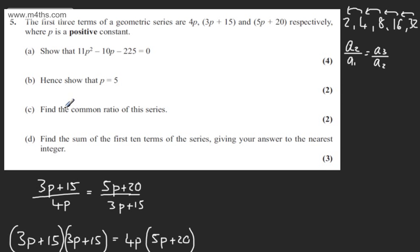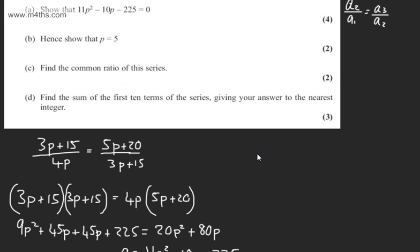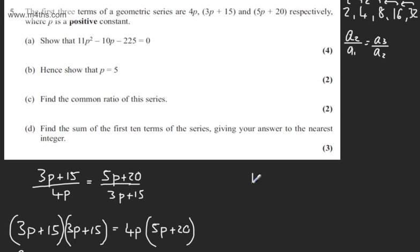In part C we need to find the common ratio of this series. So if we take p equal to 5, we have a first term, a sub 1, which is 4 lots of 5, giving us 20. The second term is 3 lots of 5 plus 15, which gives 30.